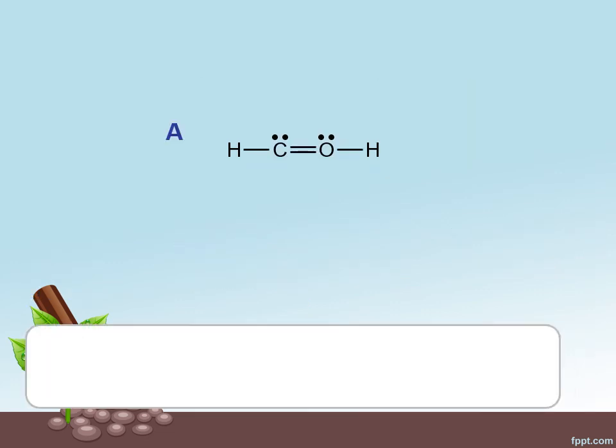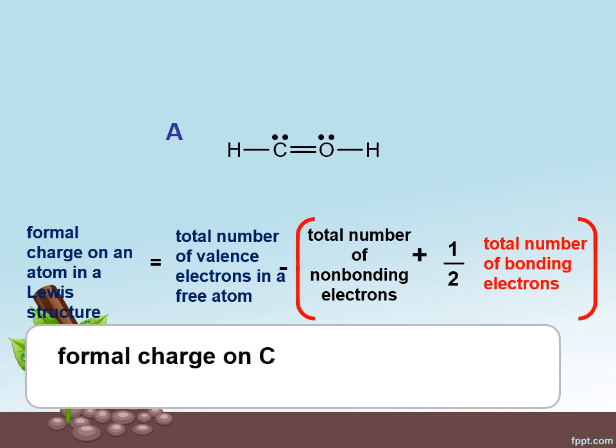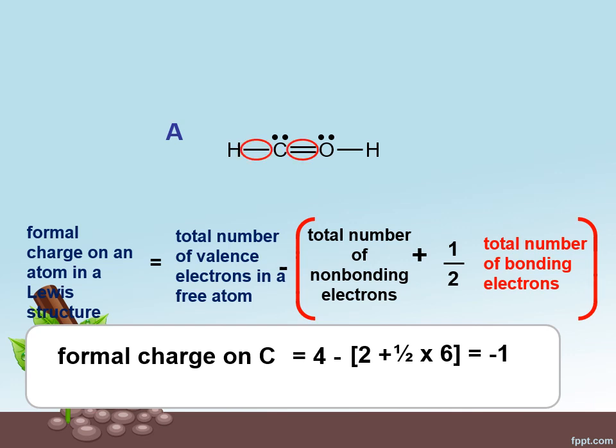Now let's calculate the formal charge for compound A. This is the formula again. Carbon has four valence electrons as a free atom minus zero lone electrons plus half times six, which is the three bonding pairs. The formal charge on carbon now is negative one.